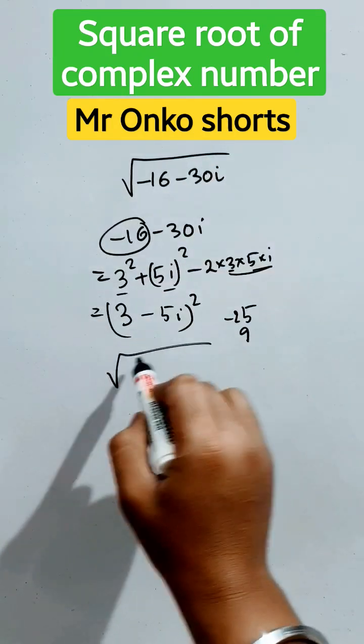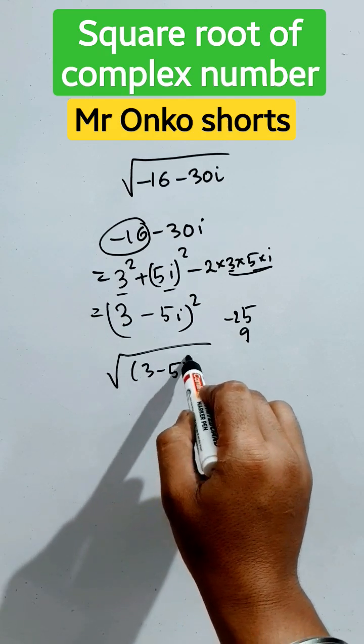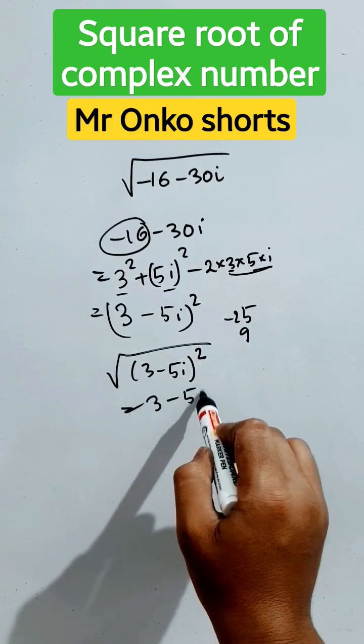Hence the square root will be root over of 3 minus 5i whole square. So the answer is 3 minus 5i.